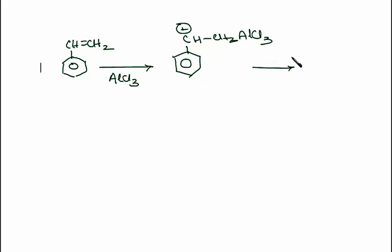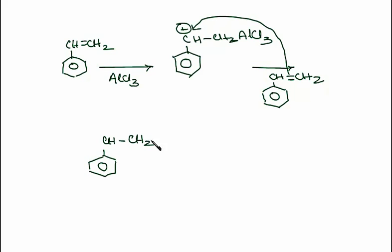Now it is again attacked by the molecule of styrene, or it attacks the molecule of styrene again. Double bond CH2. What it does? It transfers its electrons to the positively charged carbon atom. And a polymer is formed in this way. That is CH, CH2, again there is CH, then CH2, and again AlCl3.